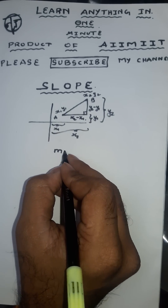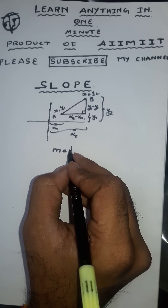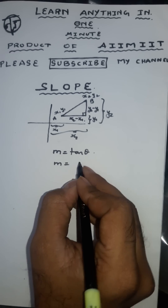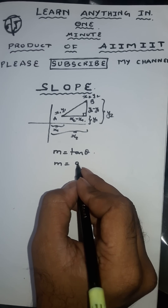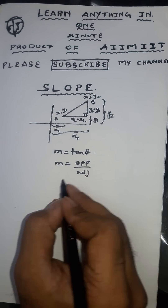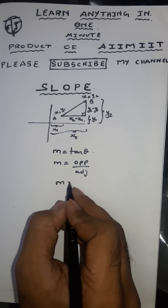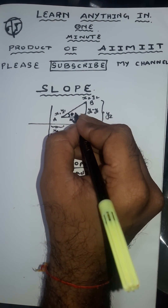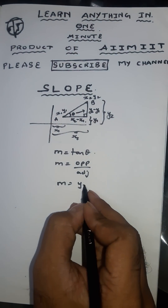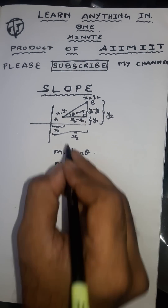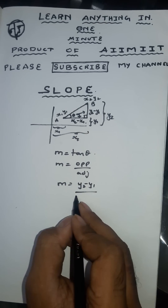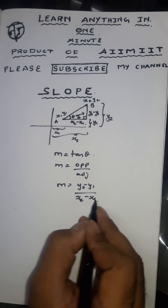We know slope is equal to tan theta. We know slope tan theta is equal to opposite by adjacent. m is equal to — opposite for theta is y2 minus y1, and adjacent for theta is x2 minus x1.